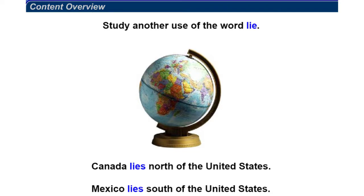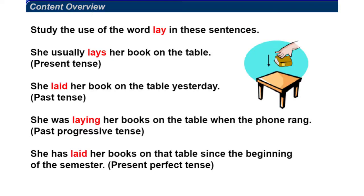Now let's study the use of the word lay in these sentences. She usually lays her book on the table - that's present tense. She laid her book on the table yesterday - that's past tense. She was laying her books on the table when the phone rang - that's past progressive tense.